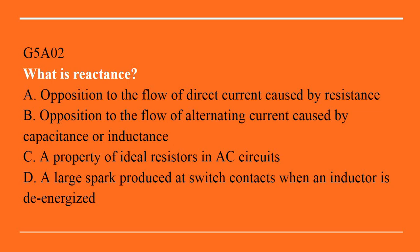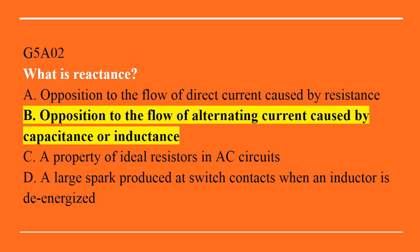G5A02: what is reactance? A. Opposition to the flow of direct current caused by resistance. B. Opposition to the flow of alternating current caused by capacitance or inductance. C. A property of ideal resistors in an AC circuit. D. A large spark produced at switch contacts when an inductor is de-energized. Answer B: opposition to the flow of alternating current caused by capacitance or inductance.